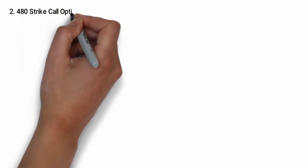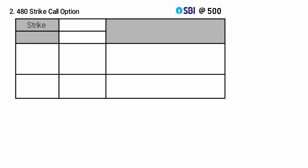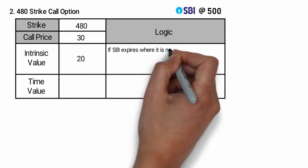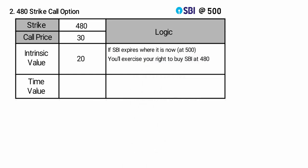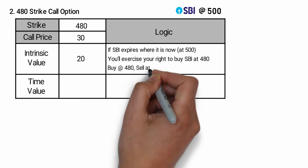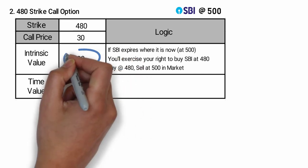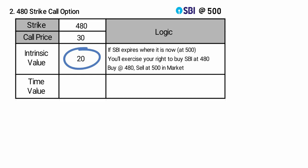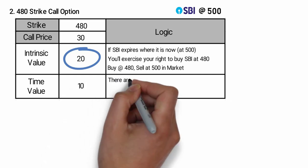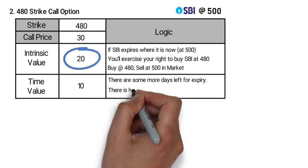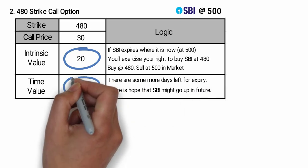Number two: the 480 strike call option. This option gives you the right to buy SBI at 480 rupees. The strike is 480 and the call option price is 30 rupees. Here the intrinsic value is 20 rupees. Why? Because if SBI expires at 500, you will exercise your right to buy at 480. So you will buy SBI at 480 and sell it in the market for 500, making 20 rupees straight. This makes the option worth at least 20 rupees. Therefore, the intrinsic value is 20 rupees. Here the time value is 10 rupees — there are some days left for expiry, so there is a hope that SBI might go up in future.